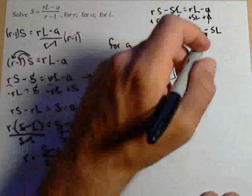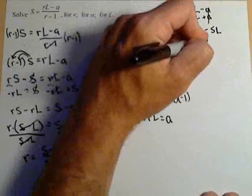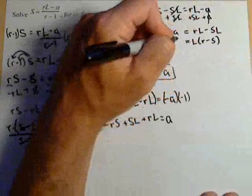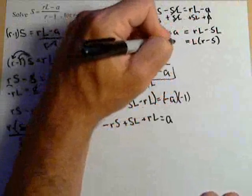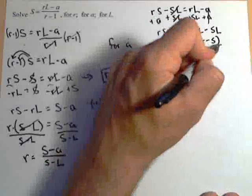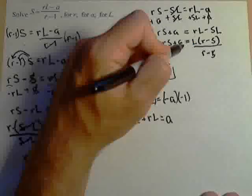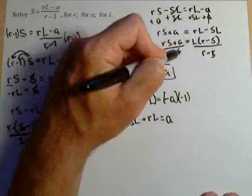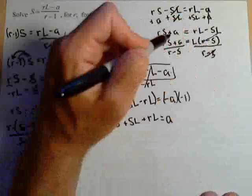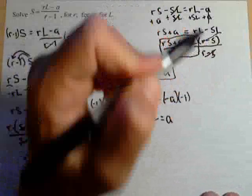We'll use the same technique we did last time, which is to factor out the L. So L times R minus S is equal to RS plus A. Same exact technique as before. Last step, divide by R minus S on both sides. And there we have what L is equal to.